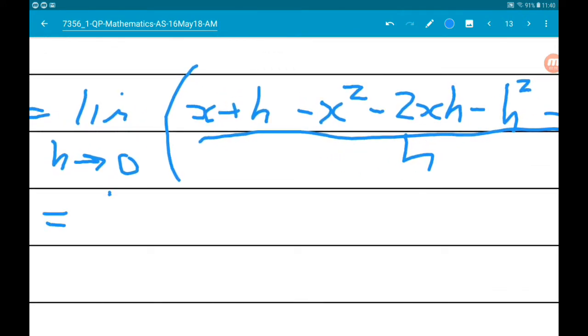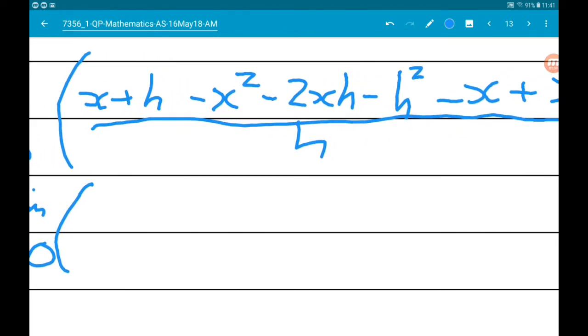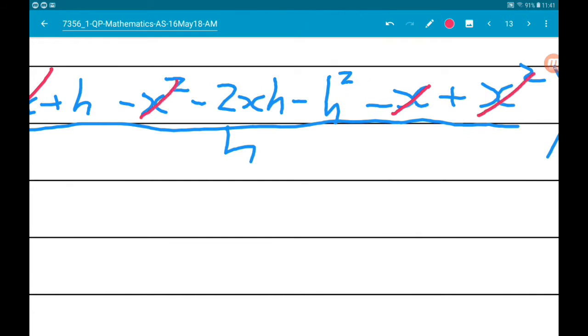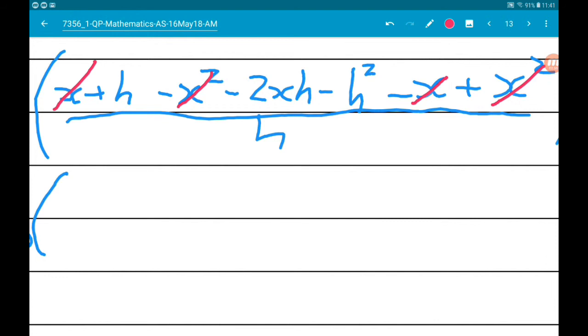This is the limit as h tends to 0 of... The x at the start cancels with the x at the end, the -x² cancels with the +x², so we are left with h - 2xh - h² all over h.